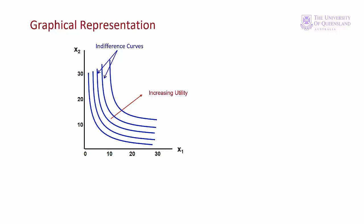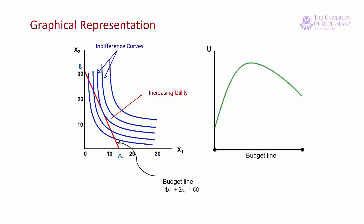So how does a consumer choose the best combination of x1 and x2? This is where the budget constraint comes in. The budget line represents the combinations of x1 and x2 when the consumer spends the full 60 dollars. The consumer chooses the combination that maximizes her utility. As we move along the budget line from point A to point B, utility is increasing up to a certain point and then decreasing. Utility reaches its maximum at the point where the budget line is just tangential to an indifference curve.